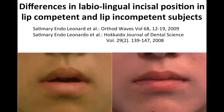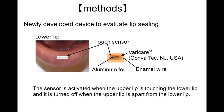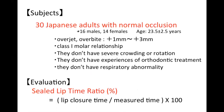Then, we tried to determine by using cephalograms whether the labiolingual position of incisors differs in lip-competent subjects and lip-incompetent subjects. The lip closure state — whether the lips are closed or apart — was detected electronically using a touch sensor. First, we determined lip-competent subjects and lip-incompetent subjects from 30 subjects who had normal occlusion. We measured the lip closure state as the seal lip time ratio of each subject. This ratio is the ratio of lip closure time to the measured time.